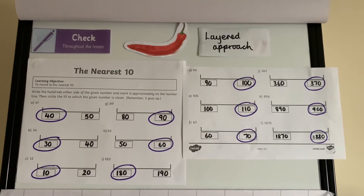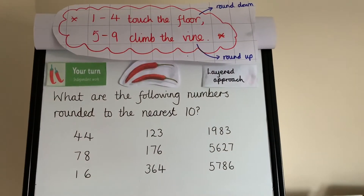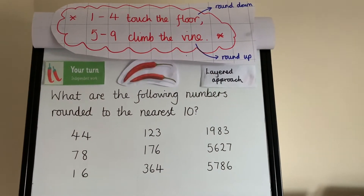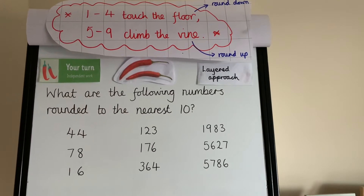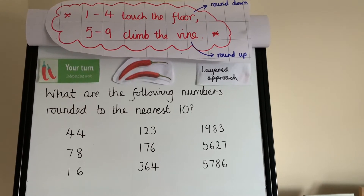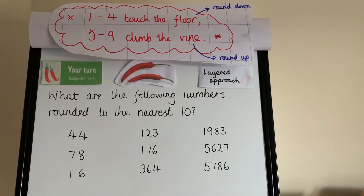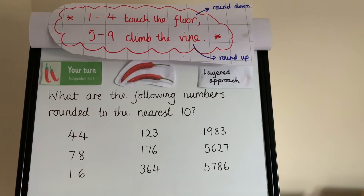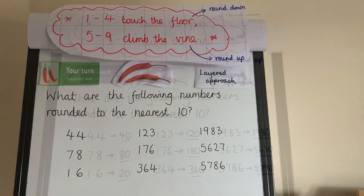Now have a go at chilli two. Look at the following numbers and round them to the nearest ten. Use the steps to success — the little rhyme — to help you. Pause the video and then come back and check in a minute.